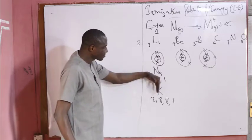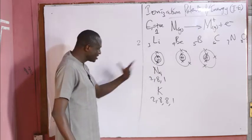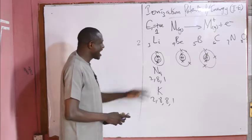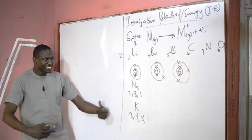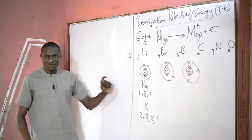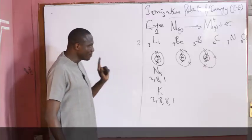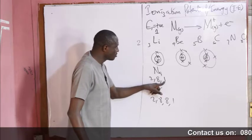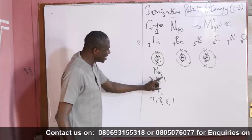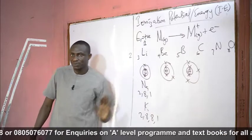So the electron to be removed becomes more farther away from the nucleus. As a result of the shielding effect, the electrostatic force of attraction between that electron and the nuclear charge becomes reduced — the nuclear grip decreases. It becomes easier to remove this electron than from sodium, which is much easier than removing the valence electron of lithium. So the first ionization energy of lithium is higher than that of sodium, that of sodium is higher than that of potassium, and this pattern cuts across every other group in the periodic table.